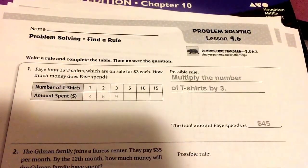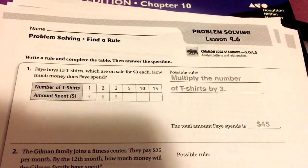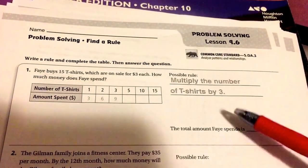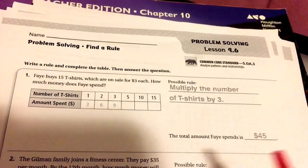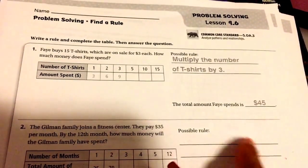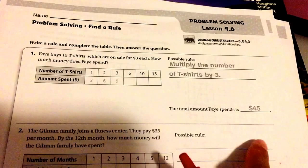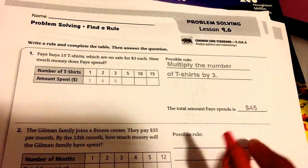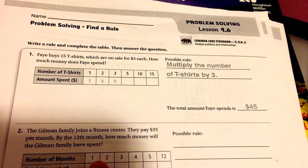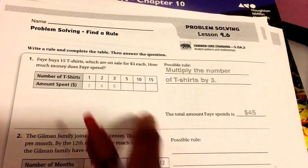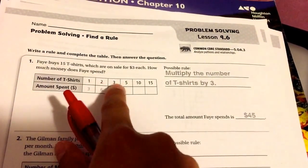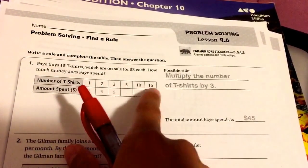Now we're on lesson 9-6, Problem Solving: Find a Rule. Lesson 9-6 looks very similar to lesson 9-5, but the only difference is when they're asking you about the rule, there's no sentence frame. The second difference is that, as you can see, it goes from one, two, three, four, five, and then all of a sudden twelve. Same with here, it goes one, two, three, instead of going four, goes to five, ten, fifteen.